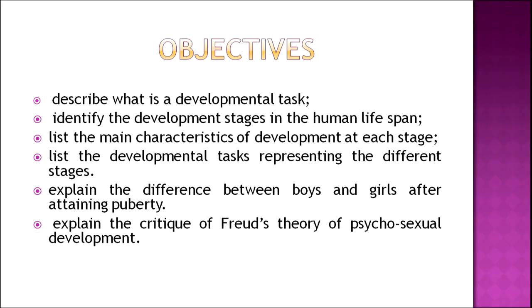In the family, we can see that our parents behave differently because they are more mature than us. This is because we are in different periods of life which are called stages. In this program, we will talk about development as it takes place in the various stages of human life. The objectives of today's program are: to describe what is a developmental task; identify the development stages in human lifespan; list the main characteristics of development at each stage; list the developmental tasks representing the different stages; explain the difference between boys and girls after attaining puberty; and explain the critique of Freud's theory of psycho-sexual development.